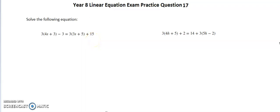The first thing we need to do is get rid of these brackets, which means we need to times 3 by everything inside. Likewise with our second bracket, we need to times the 3 by everything inside.